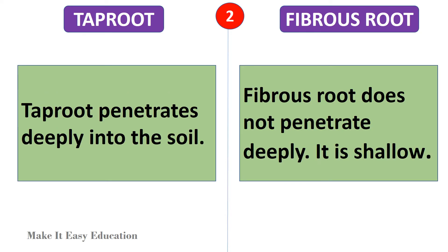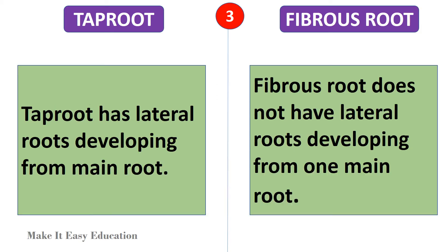Taproot penetrates deeply into the soil. Fibrous root does not penetrate deeply — it is shallow. Taproot has lateral roots developing from the main root. Fibrous root does not have lateral roots developing from one main root.